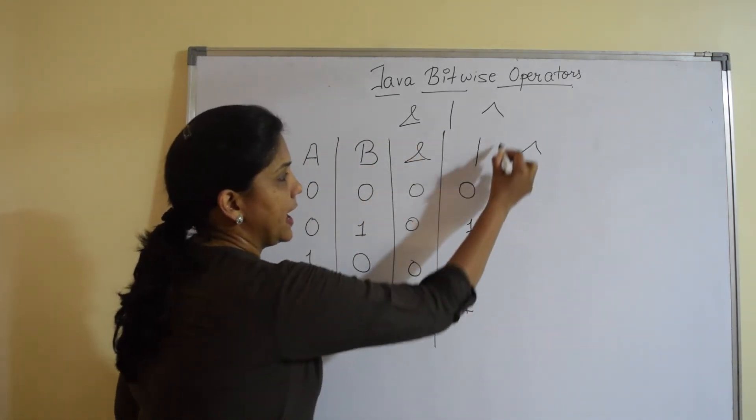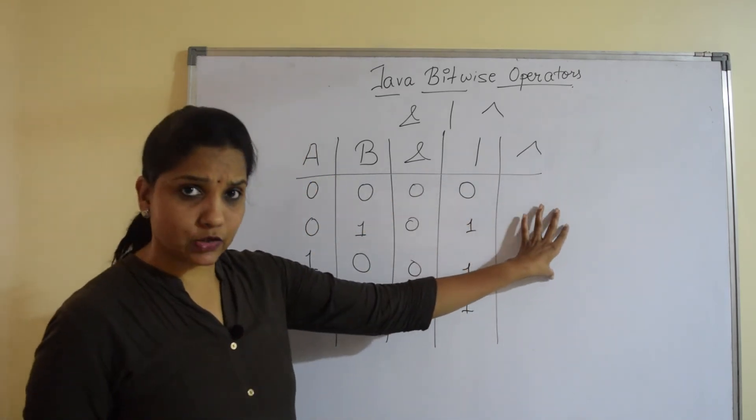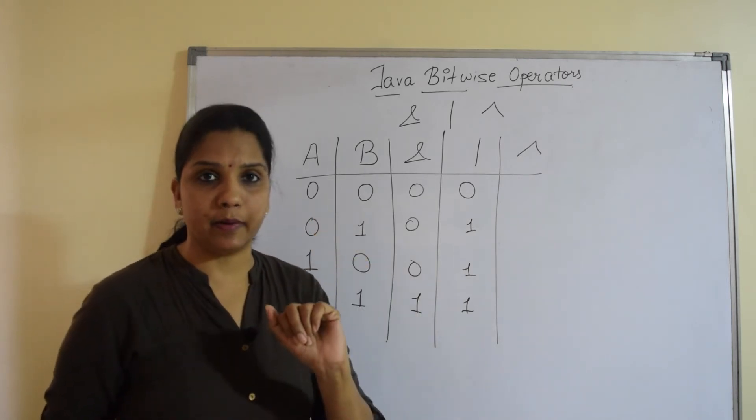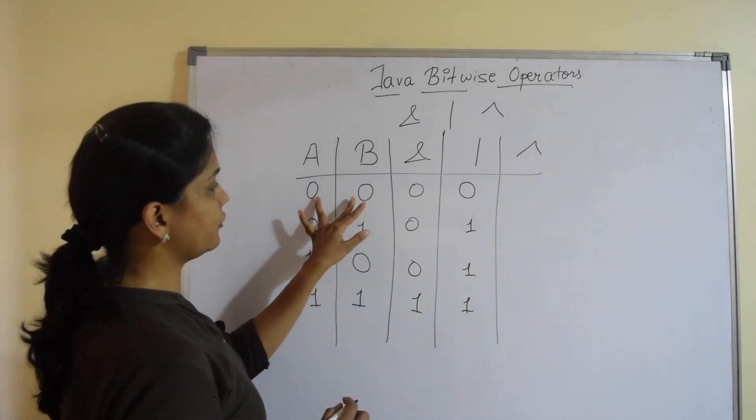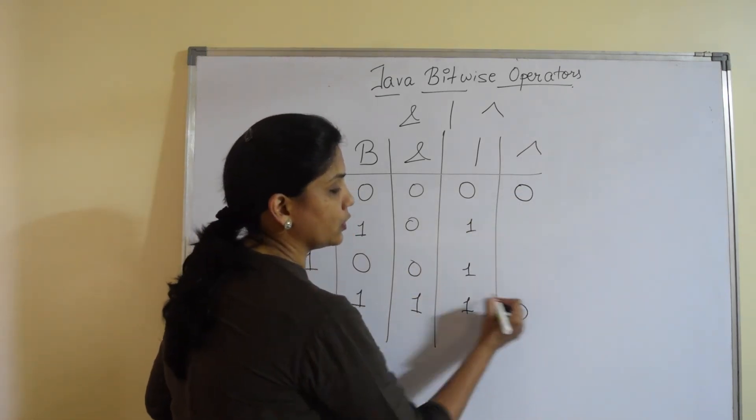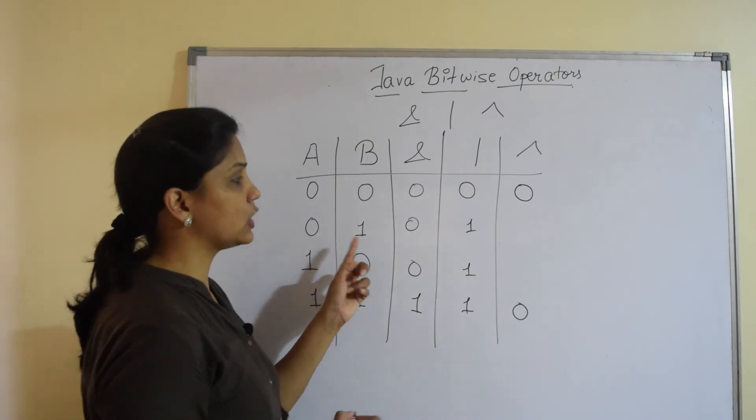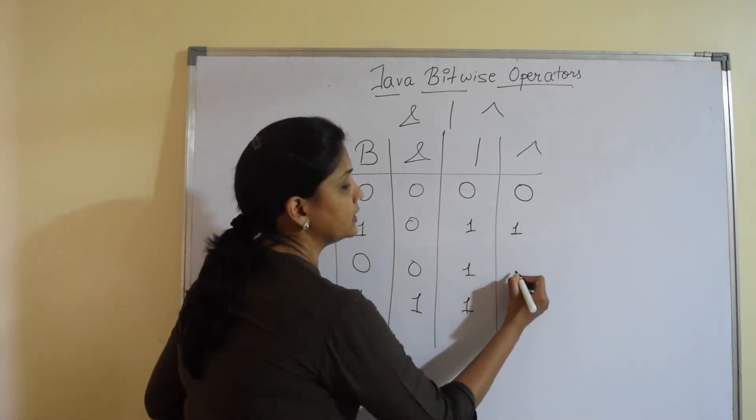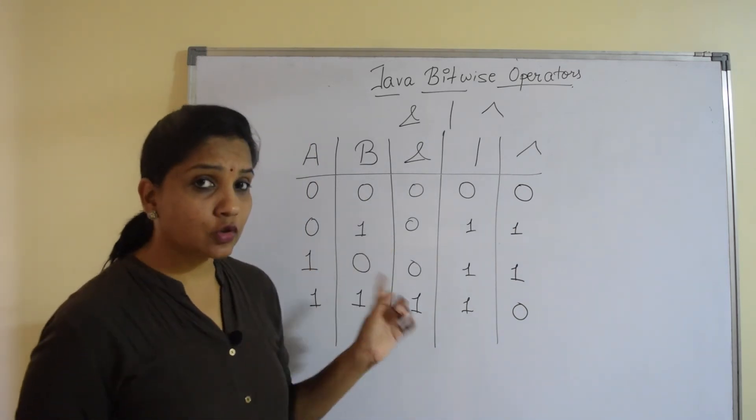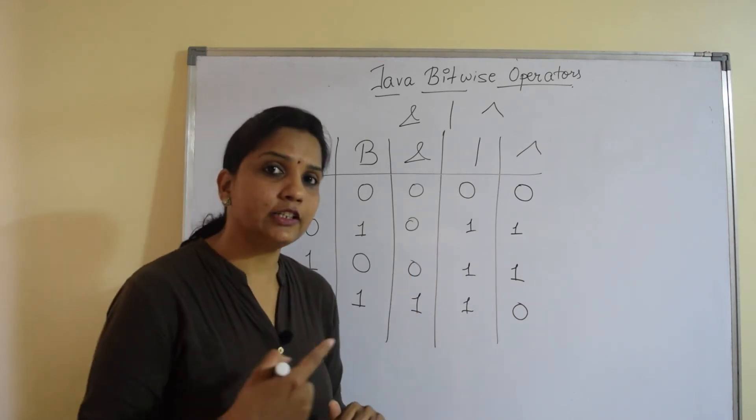Same way the XOR. Now the XOR, how it works is, it works for inverted bits. Means if I have 2 bits of same value, the output for the XOR is 0. But if I have inverted bits, that means 1 is 0 and 1 is 1, only then the output remains 1. Now remember this truth table for us to be able to understand how these operators work in Java.